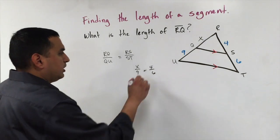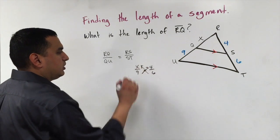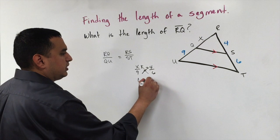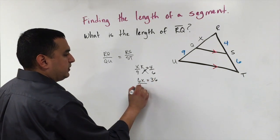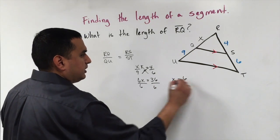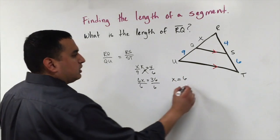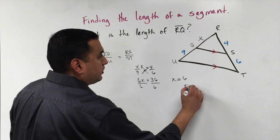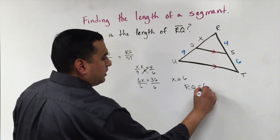And then we can do what we've been doing, using our cross products to solve. That would give us 6X is equal to 36. If I divide by 6 on both sides, that tells me that X is 6, which is our RQ, our segment. So the length of RQ is 6.